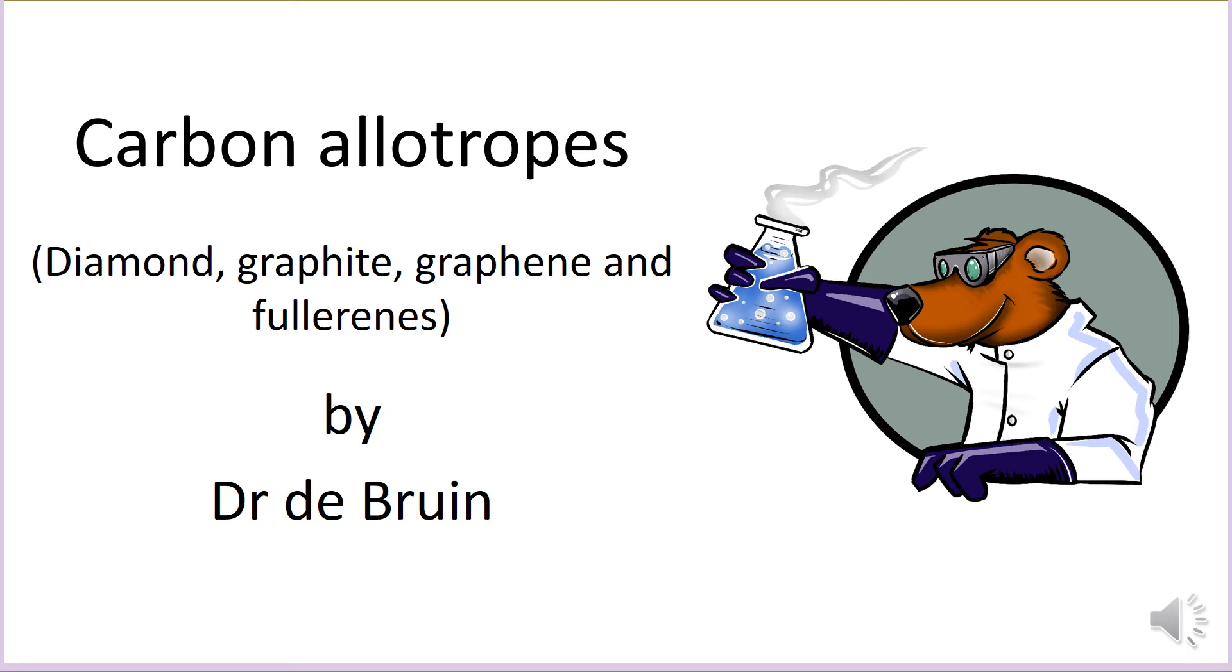This is a revision video looking at the GCSE chemistry topic of diamond, graphite, graphene and fullerenes. This comes up in Unit 2, which is the structure and bonding topic in Paper 1 of AQA GCSE Chemistry and Combined Science.